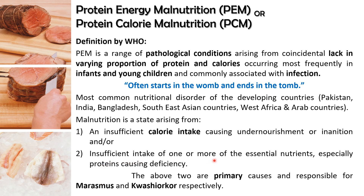When there is insufficient intake of one or more essential nutrients, especially proteins, along with calories, it may lead to another type: Kwashiorkor. There is also a third intermediate type where some symptoms of both Marasmus and Kwashiorkor are present. The two primary causes are either calorie intake deficiency or protein deficiency. Secondary causes include protein deficiency from diagnosis, GIT problems, and critical illness, which will be taught in subsequent lectures.